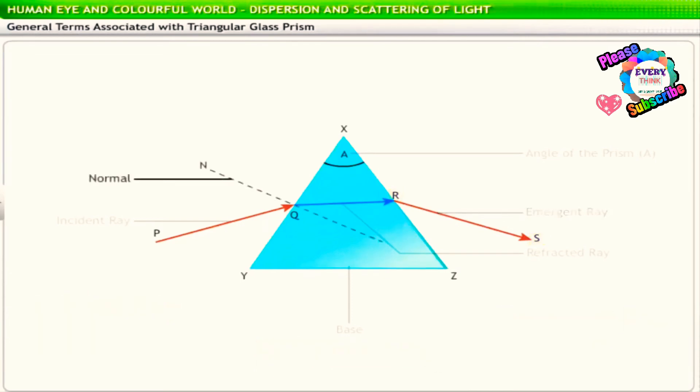Normal is the imaginary line drawn perpendicular to the surface at the point of incidence. The angle formed between the incident ray and the normal at the point of incidence is known as the angle of incidence. Thus, here, angle I1 is the angle of incidence on the face represented by XY.